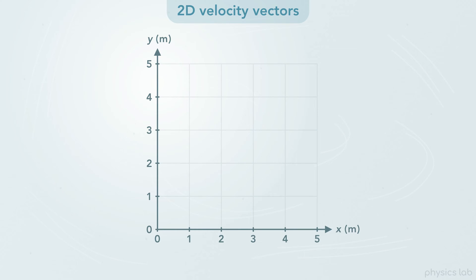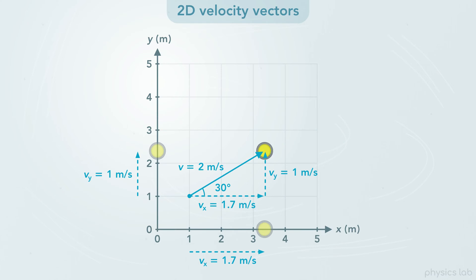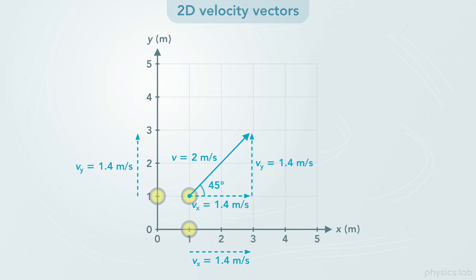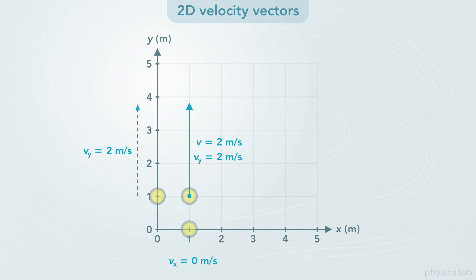Let's do a quick recap by looking at some examples. If the stone is moving directly to the right at 2 meters per second, then the x component of the velocity is also 2 meters per second, and the y velocity is 0. If the stone is moving at 30 degrees, the x velocity is 1.7 meters per second, and the y velocity is 1 meter per second. If the stone moves at 45 degrees, then both the x and y velocity components are 1.4 meters per second. If the stone moves at 60 degrees, the x velocity is 1 meter per second, and the y velocity is 1.7 meters per second. And if the stone moves directly upwards, then the y velocity is 2 meters per second, and the x velocity is 0.